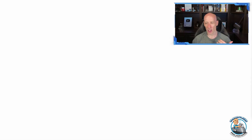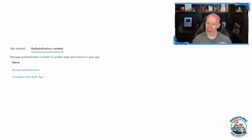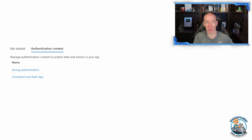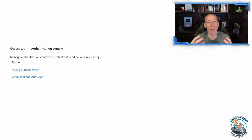What we can do instead is leverage this idea of an authentication context. This idea is not new — it's really just a tag, a label, that I can apply to certain things. I could apply it to certain actions in Entra, to certain SharePoint sites, or to certain types of classified data via things like Defender for Cloud Apps.